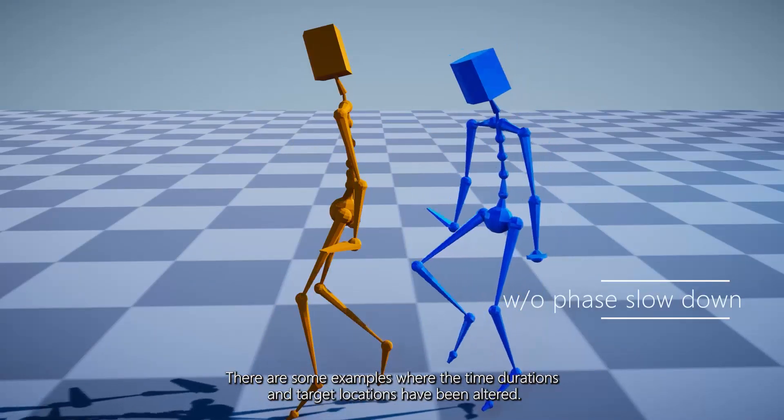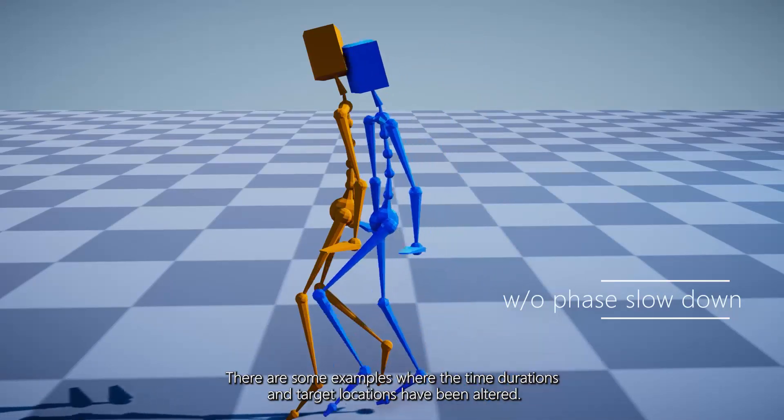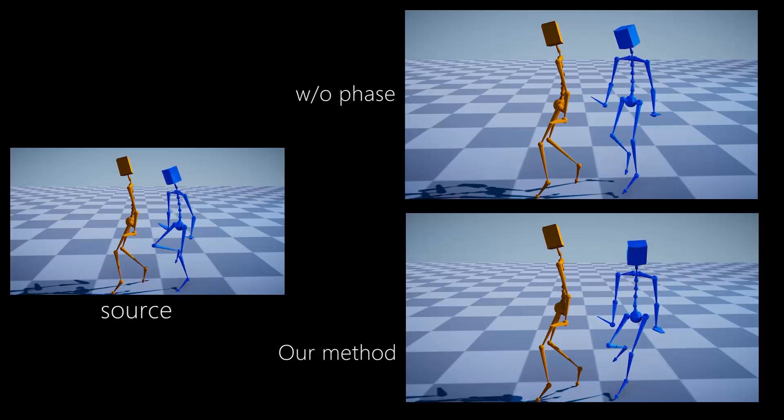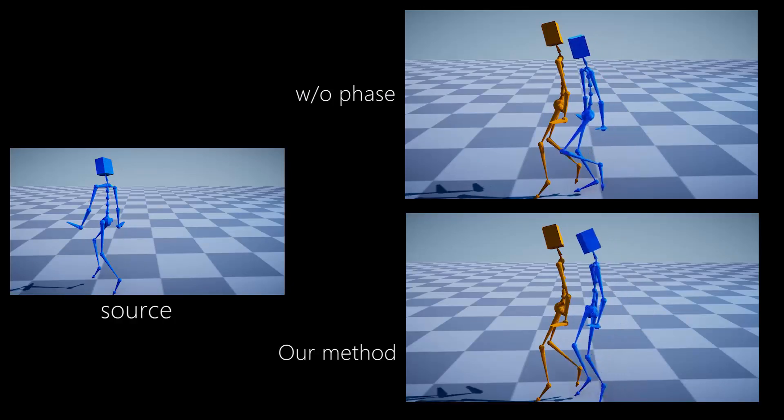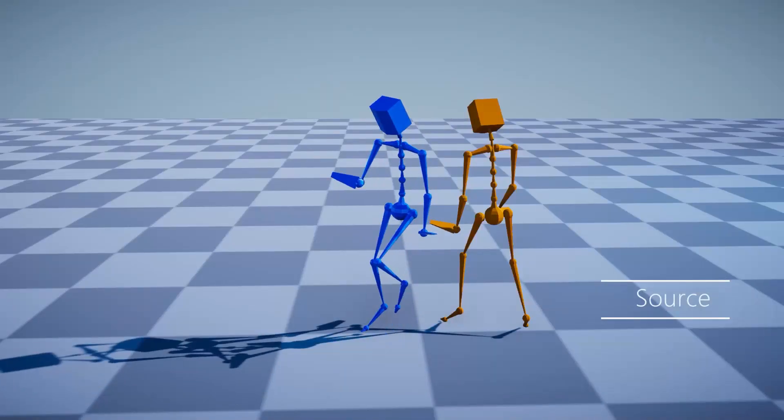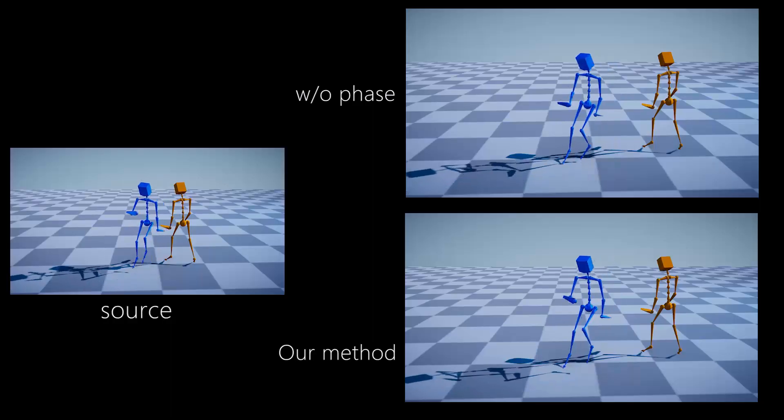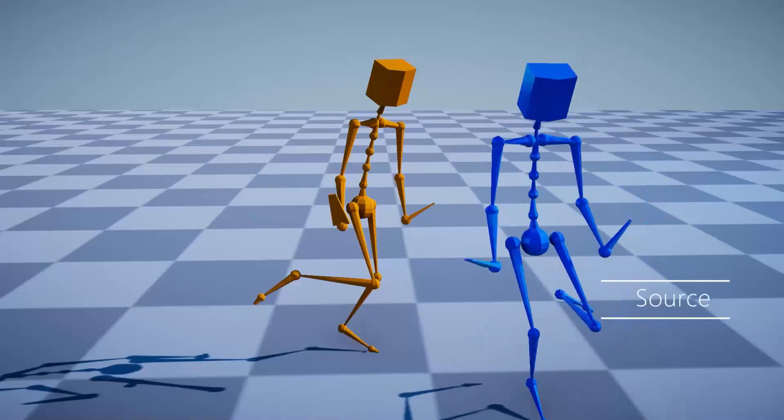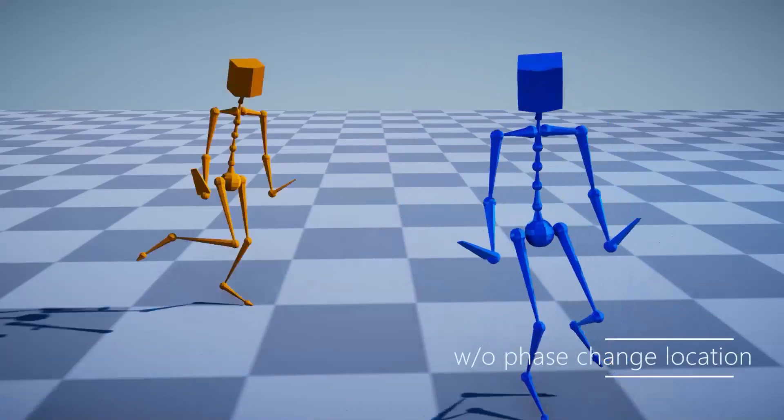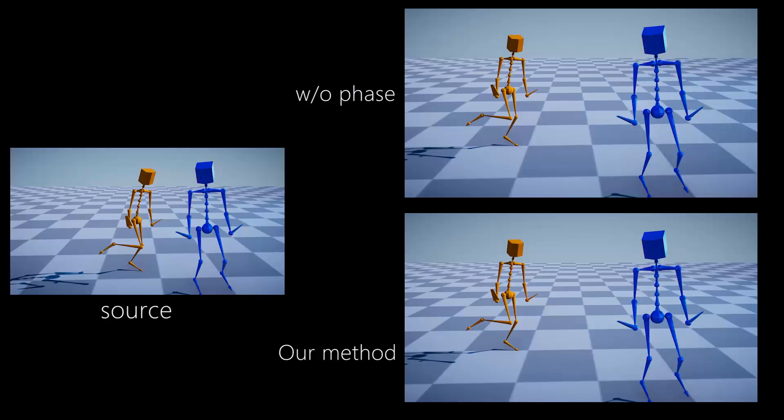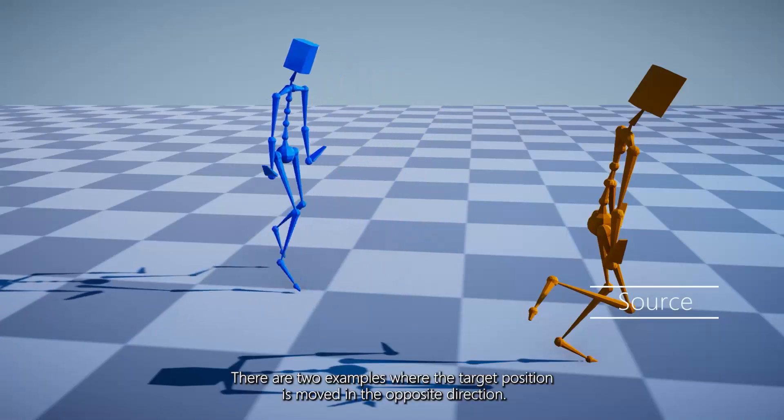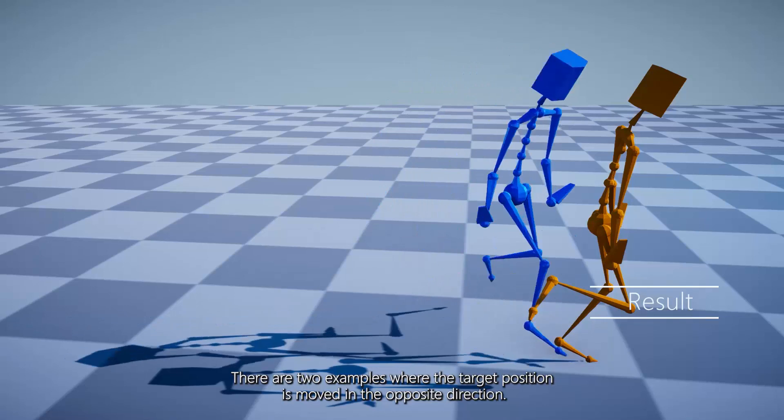There are some examples where the time durations and target locations have been altered. There are two examples where the target position is moved in the opposite direction.